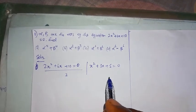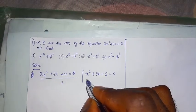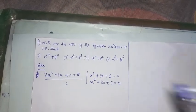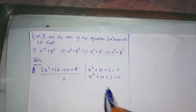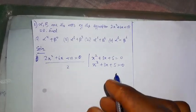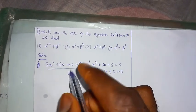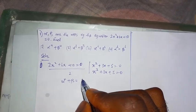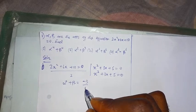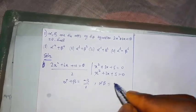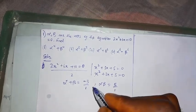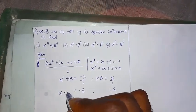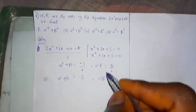So I have x² plus 3x plus 5 equals zero. Comparing with the standard form, alpha plus beta equals minus b over a, which is minus 3 over 1, so alpha plus beta equals minus 3. And alpha times beta equals c over a, which is 5 over 1, so alpha beta equals 5.